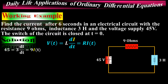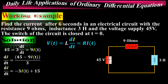Simplifying the equation gives dI/dt equals negative 3 times I(t) plus 15. Solving by separating the variables and integrating, the general solution is I(t) equals C times e to the power of negative 3t plus 15 over 3, which simplifies to C times e to the negative 3t plus 5.